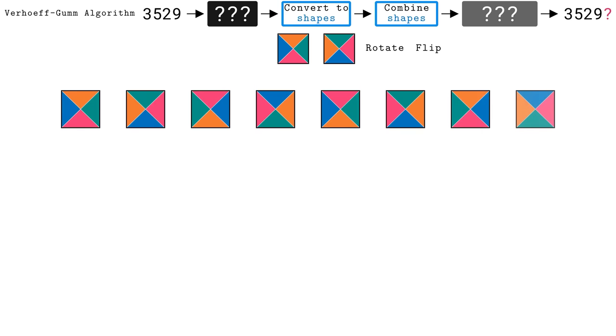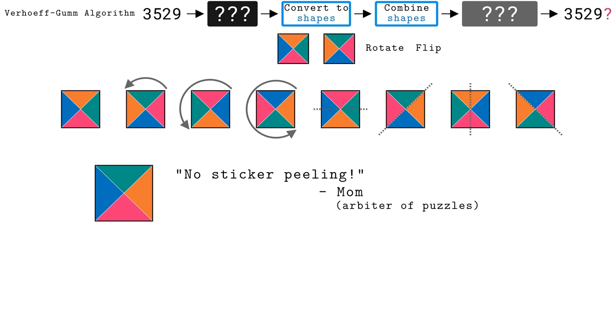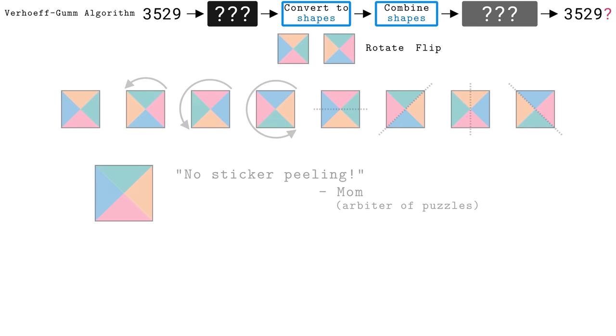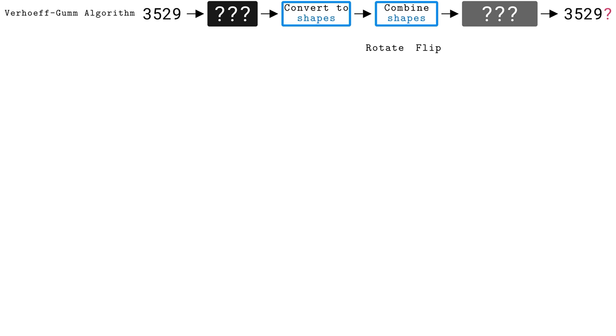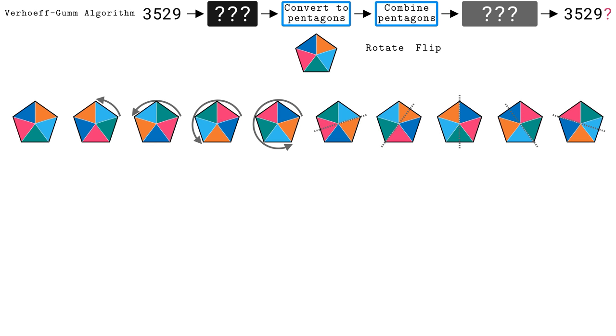If we start flipping and rotating a four-colored square, we discover eight distinct orientations, four from rotating it and four from flipping it over an axis. We could make a different square by reassigning colors, like peeling stickers off of a Rubik's cube, but my mom yelled at me for that as a kid, so let's just stick to rotating and flipping. Unfortunately, eight squares is not enough for ten digits. What about pentagons? Turns out there are ten orientations of a five-colored pentagon, just what we need.